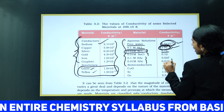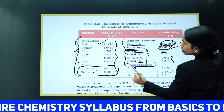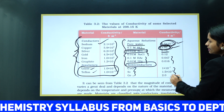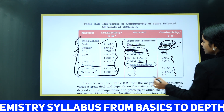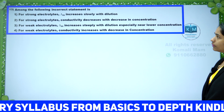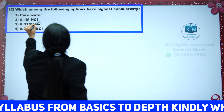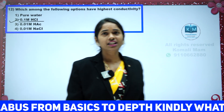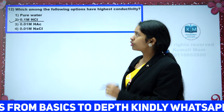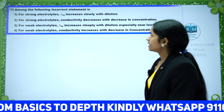Semiconductors include CuO, Si, and germanium. Among semiconductors, germanium is more conductive. So the correct answer here is 0.1 molar HCl, which shows the most conductivity due to its higher concentration.